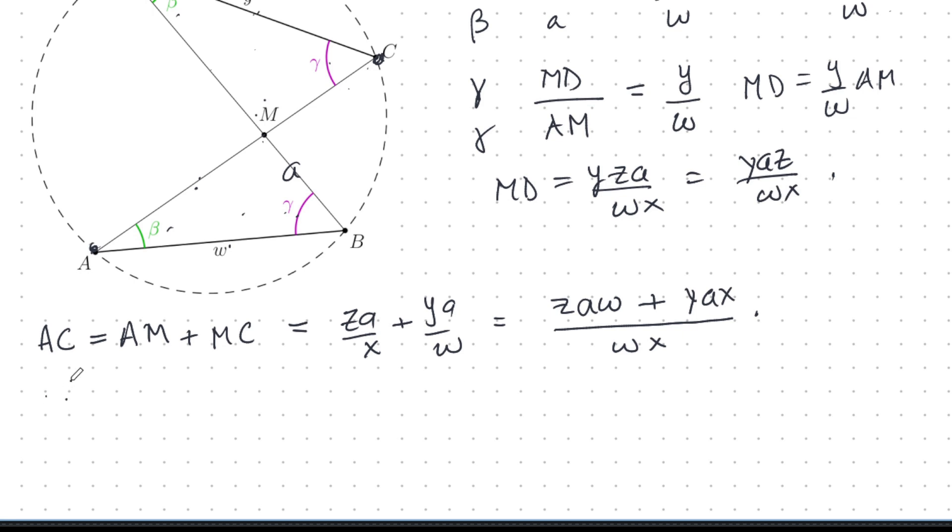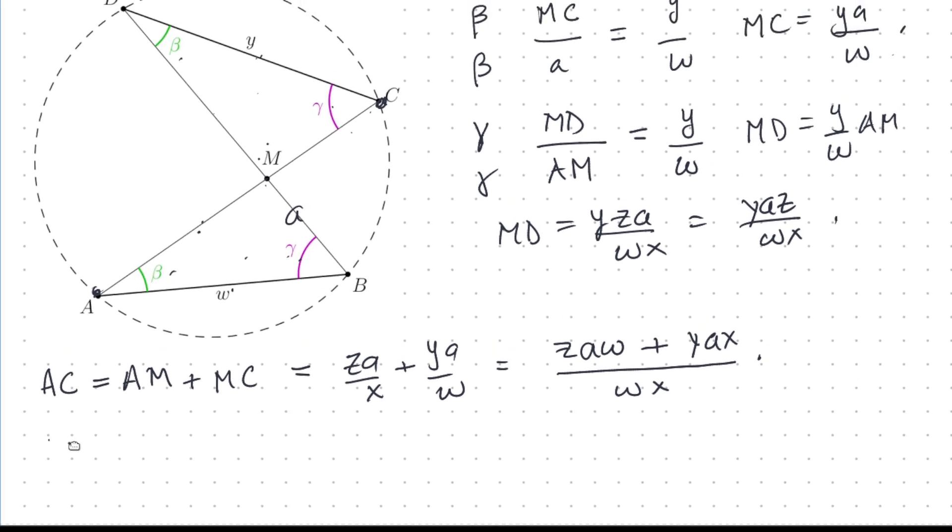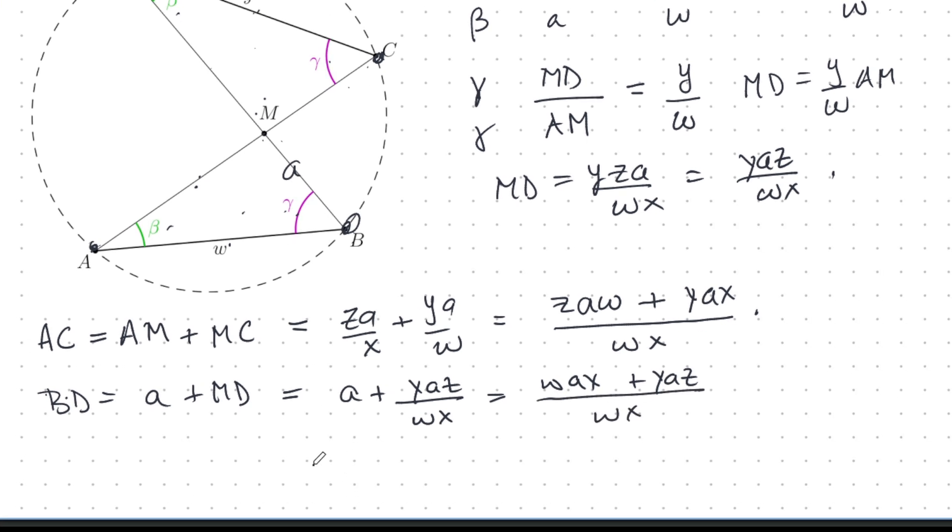Now, what about the other diagonal? The other diagonal is what? It's BD from B here to D here. So BD is two pieces. It's a, this piece BM, plus MD. But we know MD. So that's a plus y times z times a over wx. So let's cross multiply: w times x times a plus y times z times a over wx. Very nice so far. Very good.